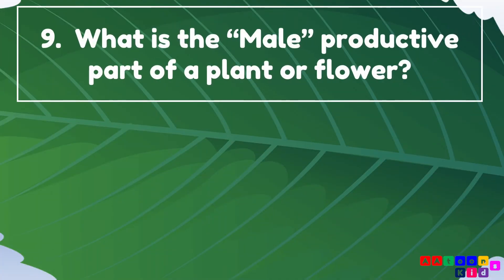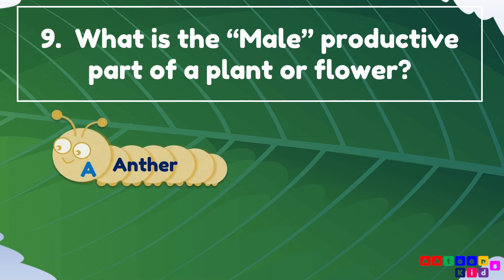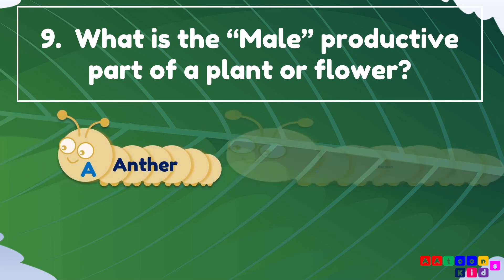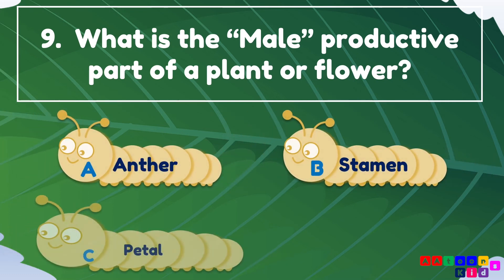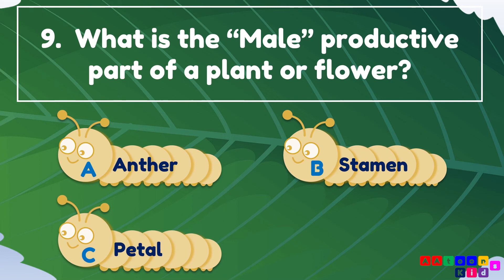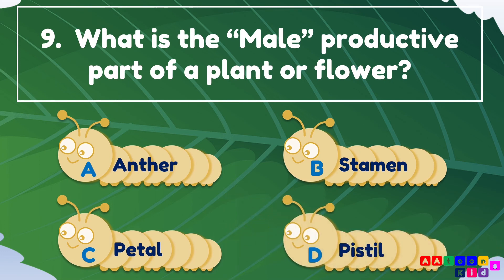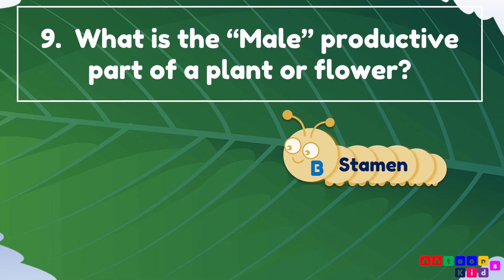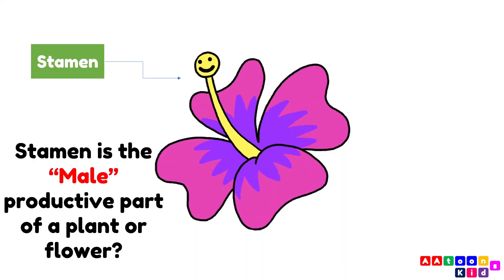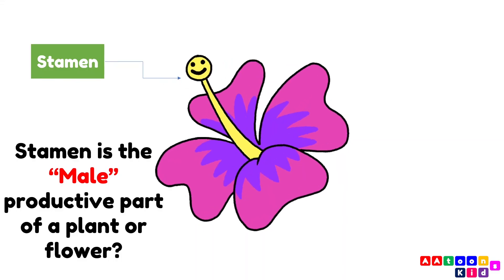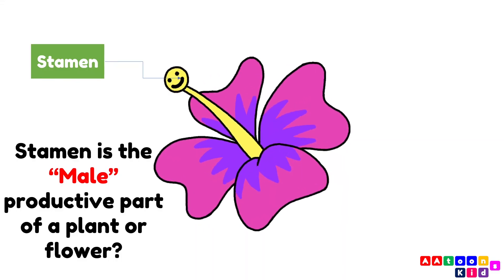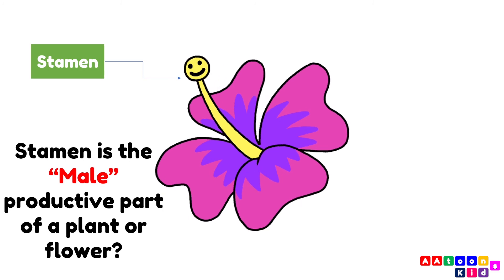What is the male reproductive part of a plant or flower? The answer is stamen. Stamen is the male reproductive part of a plant or flower.